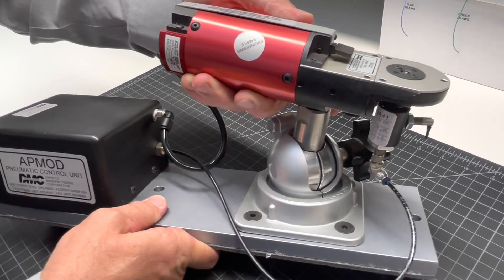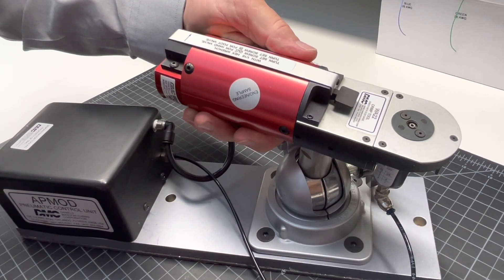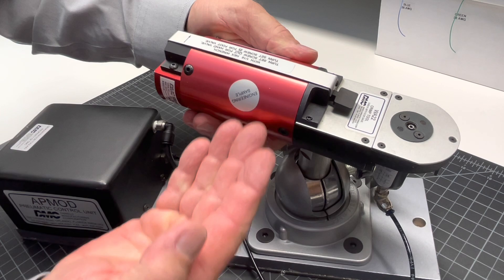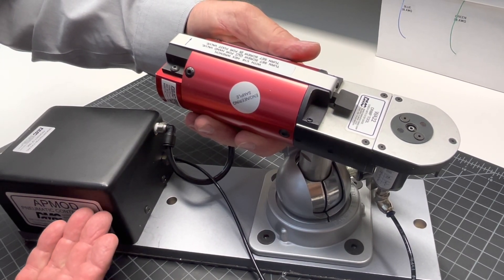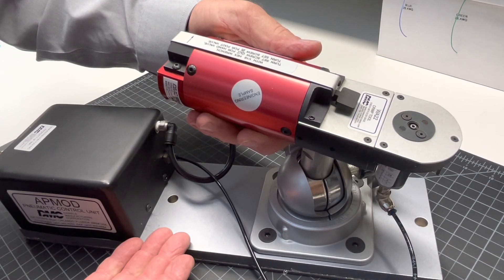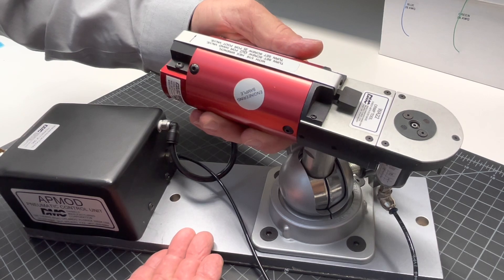The AP mod can be purchased in two different configurations. One would be that you order the tool already set up with the AP mod, or you can order just the AP mod system itself and retrofit your tool that you already have on the shop floor.